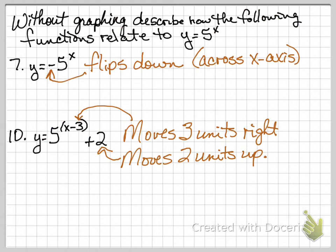Number 7 and number 10 wanted us to describe, without graphing, the following functions related to the parent function y equals 5 to the x. Number 7 is y equals negative 5 to the x. That negative flips our graph down across the x-axis.